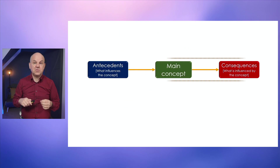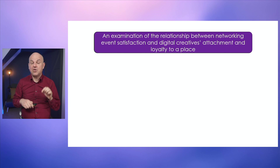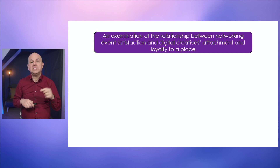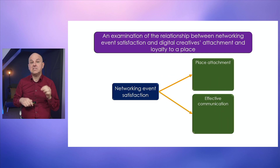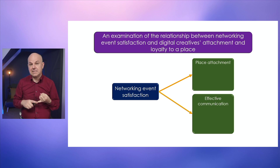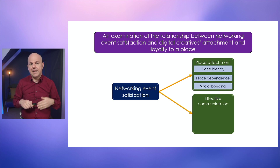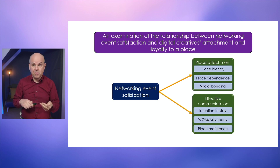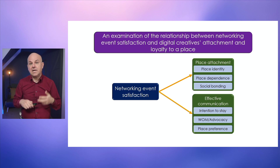The second example relates to the consequences of a main concept, from a dissertation entitled 'An Examination of the Relationship Between Networking Event Satisfaction and Digital Creatives' Attachment and Loyalty to a Place.' The key concept is networking event satisfaction, and the two consequences defined for the study are place attachment and loyalty. The student defined these as place identity, place dependence, and social bonding — elements of place attachment — and intention to stay, word of mouth or advocacy, and place preference — elements of loyalty.